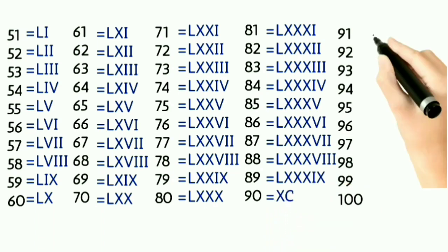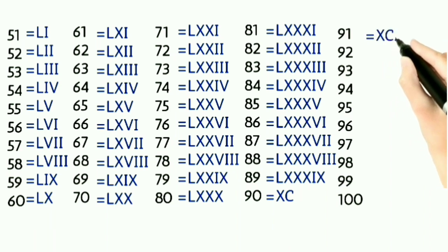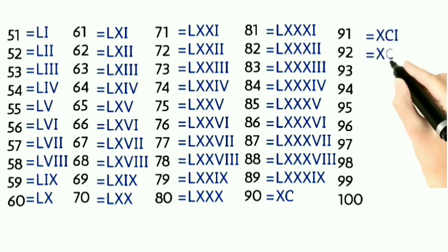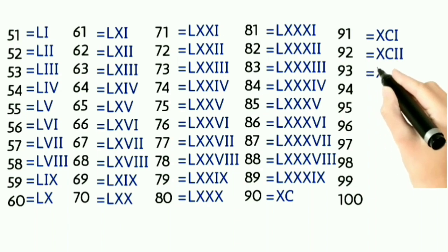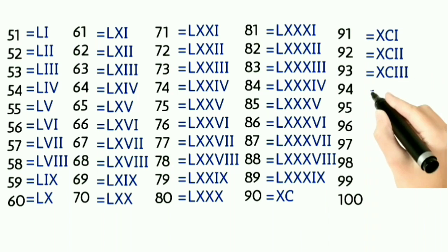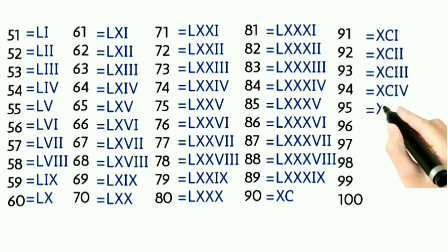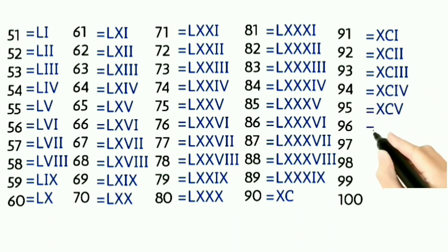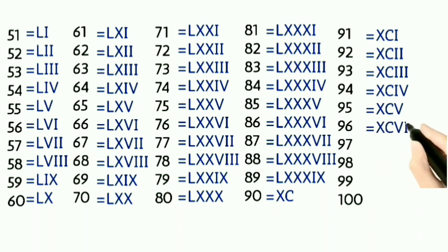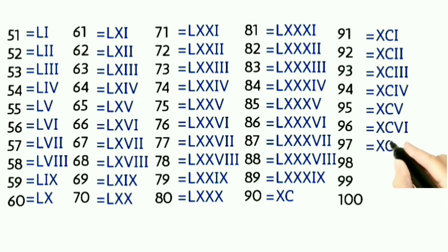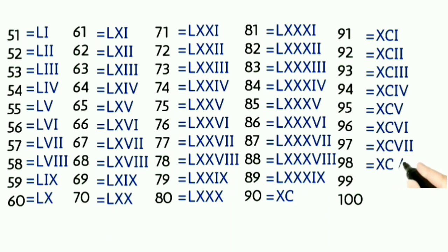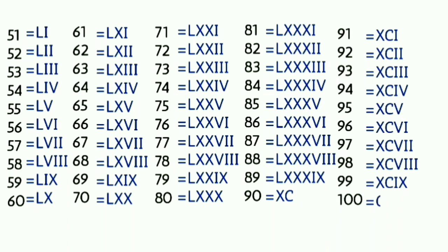Ninety has XC. Ninety-one has XCI. Ninety-two has XCII. Ninety-three has XCIII. Ninety-four has XCIV. Ninety-five has XCV. Ninety-six has XCVI. Ninety-seven has XCVII. Ninety-eight has XCVIII. Ninety-nine has XCIX. And one hundred has C.